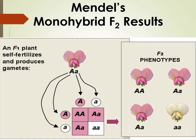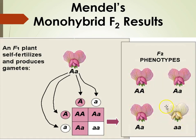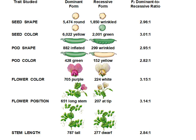Seeing this again with the diagrams: heterozygous parents — big A little a crossed with big A little a — gives us that 1:2:1 genotypic ratio, or 3:1 phenotypic ratio. Three of the flowers in the F2 generation will be pink and one will be white, or 75% will be pink and 25% will be white.